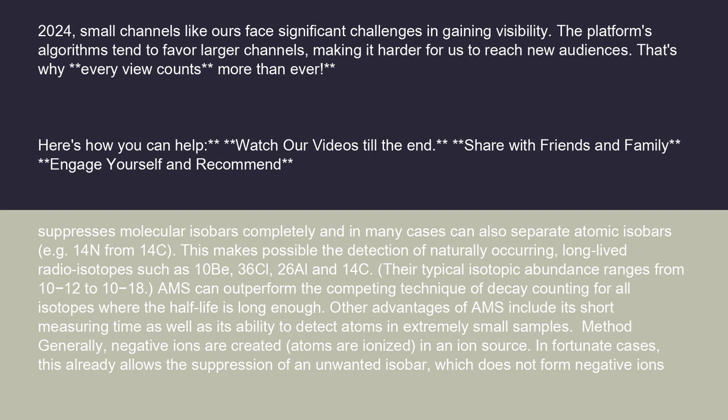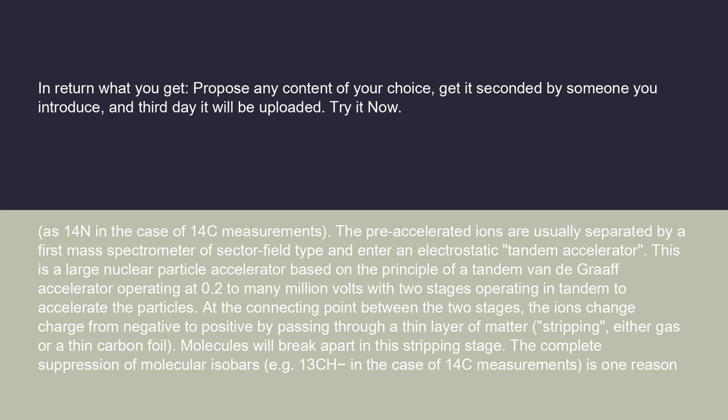Regarding the method generally: negative ions are created — atoms are ionized — in an ion source. In fortunate cases, this already allows the suppression of an unwanted isobar which does not form negative ions, such as 14N in the case of 14C measurements. The pre-accelerated ions are usually separated by a first mass spectrometer of sector field type.